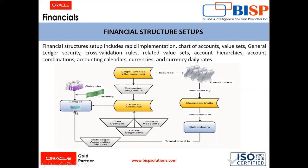This ledger is characterized by calendar, currency, and chart of accounts. A chart of accounts consists of segments, some of which are assigned labels such as cost centers, natural accounts, and other segments including the primary balancing segment. The legal entities can be assigned the primary balancing segment values. This is the enterprise structure flow which can be managed through the financial structure setups.